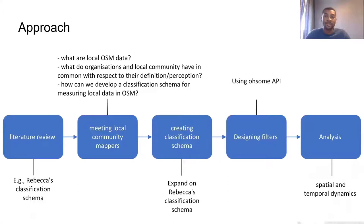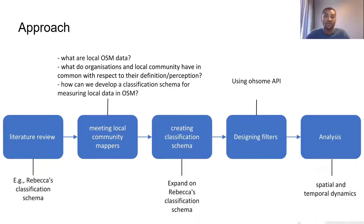In this study, we first started with a literature review, then had discussions with local community mapping groups. We were mainly interested in finding out what is local OSM and what their perceptions were. Together with the local community working groups, we developed a classification schema for measuring local data in OSM. Afterwards, we designed the classification schema and filters using the OHSOME API by the HeiGIT group, and then we had case studies to test it.